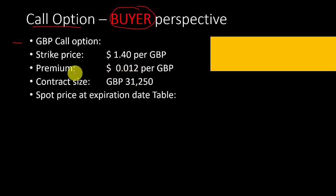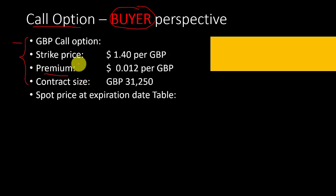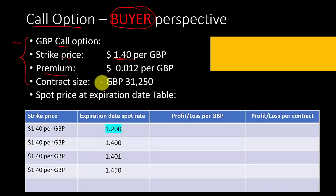With this specification, if you want to own the contract you first have to pay the premium. Once you pay the premium you are the owner of the contract and you have the right to buy at this exercise price. In this table we will analyze the profit or loss of the buyer under different spot rate scenarios at the expiration date.